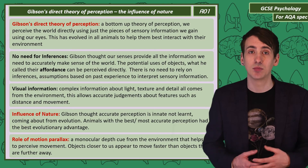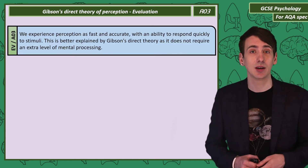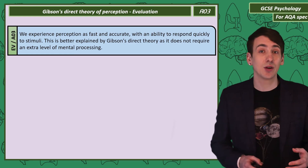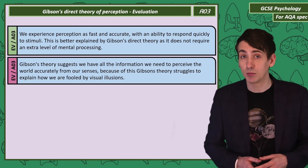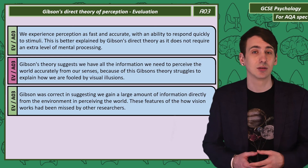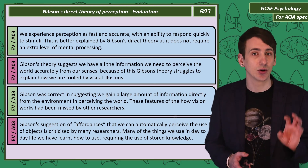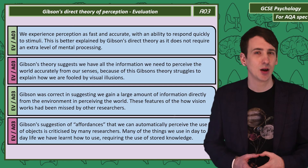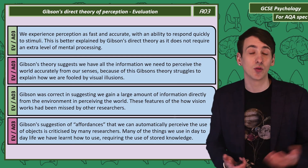Gibson used motion parallax as an example of how much information our eyes can give us directly about features such as motion and depth. The speed of perception — being able to respond quickly and precisely to visual stimuli — is better explained by Gibson's direct theory, as Gregory's theory requires an additional level of mental processing. Gibson's theory suggests that we gain all of the information we need from our eyes, but this struggles to explain how we're fooled by visual illusions. Gibson is correct in saying there's a significant amount of information directly perceived by the eyes, which could allow accurate perception. Gibson used the term affordances to explain how we automatically perceive the usefulness of objects from sensory information, to avoid the concept of inferences. But researchers reject the idea of affordances, as many of the things we use in everyday life we've learnt how to use and have stored that knowledge.